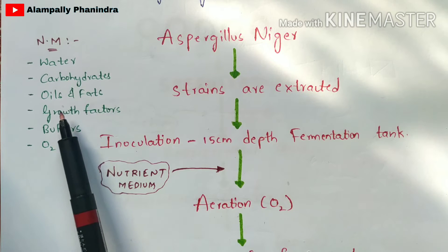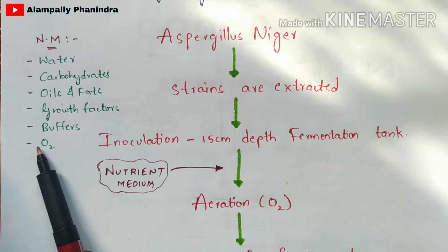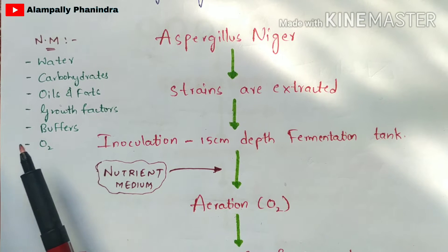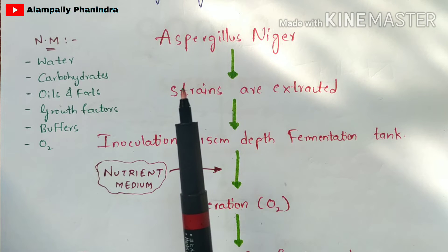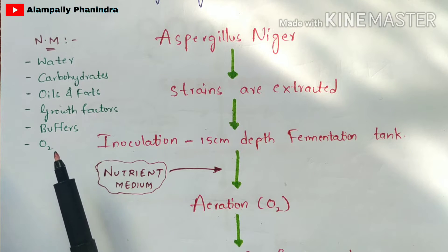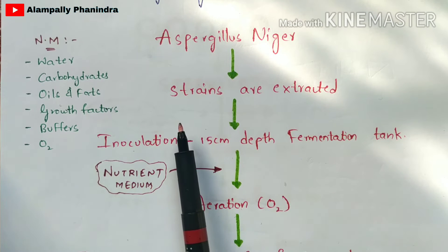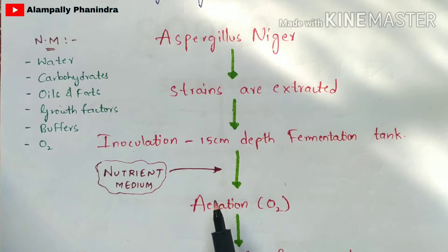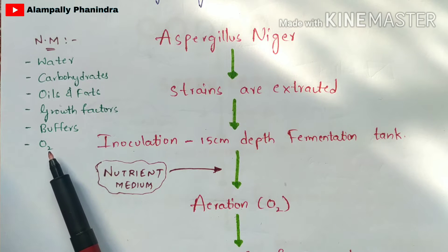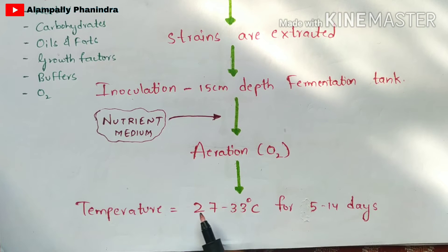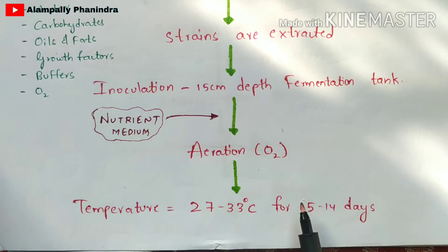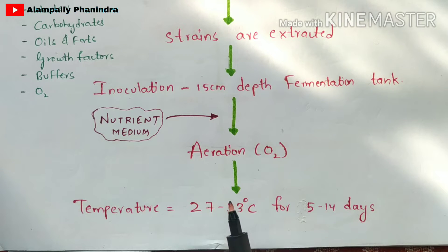The nutrient medium includes water, carbohydrates, oils and fats, growth factors, buffers, and oxygen. Oxygen plays a major and vital role and is highly necessary for the production of citric acid — in fact, for any organic acid such as lactic acid or glutamic acid, oxygen is essential; without oxygen there will be no production. The process of inserting oxygen into the fermentation tank is called aeration. The temperature applied is 27 to 33 degrees Celsius, maintained for 5 to 14 days.